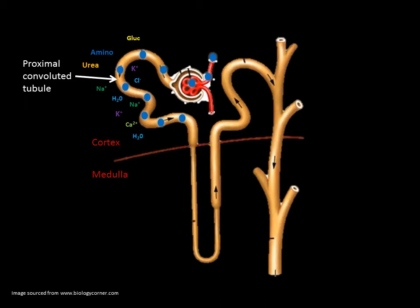Reabsorption of these solutes creates water reabsorption by creating an osmotic gradient. As more water is reabsorbed into the blood, the solute concentration becomes greater in the tubules, causing an electrochemical gradient which promotes further diffusion of solutes back into the capillaries.